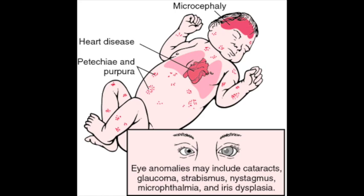If a mother contracts the rubella virus during the first 12 weeks of pregnancy, there is up to an 85% chance that her baby will develop congenital rubella syndrome. Mothers who are infected between 13 and 16 weeks have about a 54% chance that their child will be affected, and the rate continues to decrease as time goes on. After 20 weeks gestation, there is very little risk that the infection will cause any birth defects.